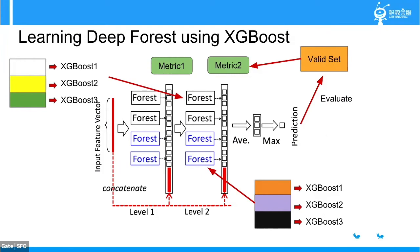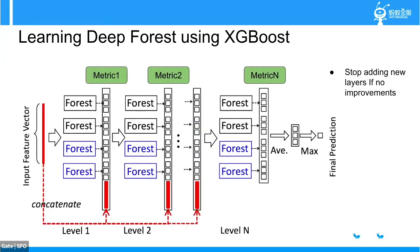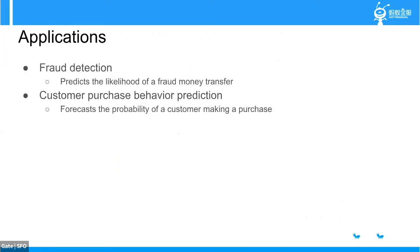For each layer we get a metric value, and we continue adding layers until level N, stopping when there is no improvement. I'll now talk about several applications at Ant Financial. The first one is fraud detection, which predicts the likelihood of a fraudulent money transfer. The second one is customer purchase behavior prediction — basically a customer screening process that forecasts the probability of a customer making a purchase in the future.